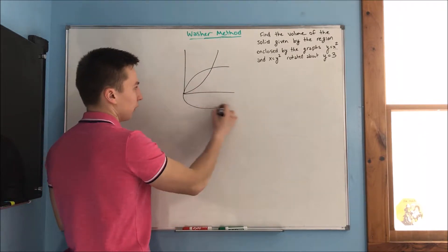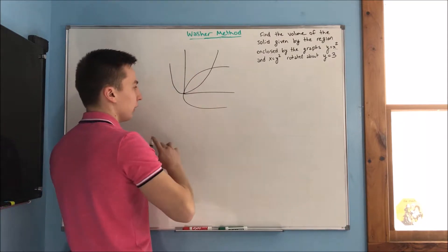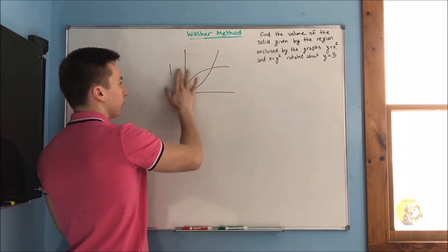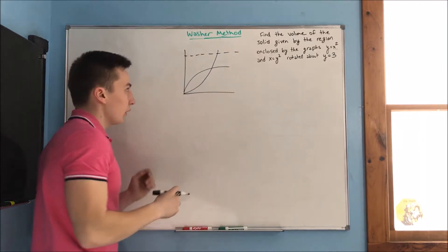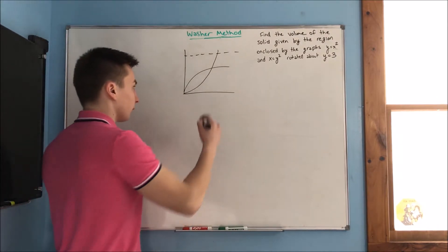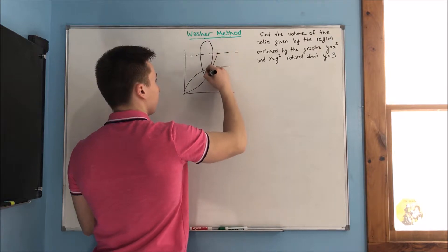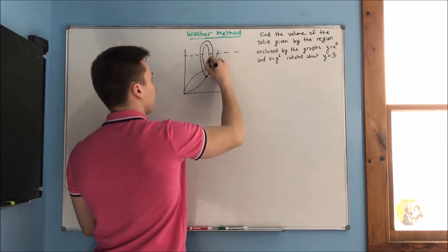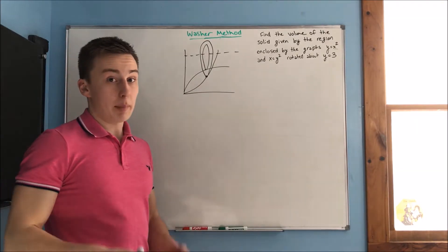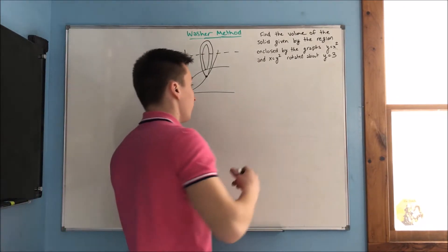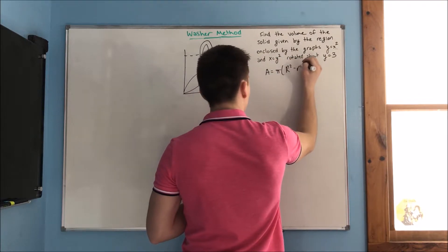The two curves look like this, finding this region right here. We are rotating about y equals 3, which is up here. So when we do our washer, we are taking it from here and going like this — we have our inner radius too. The most challenging part of this problem is finding the radii. Our area is equal to pi times big R squared minus little r squared.